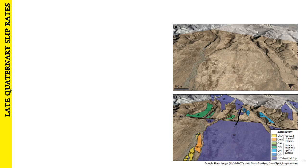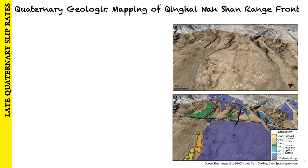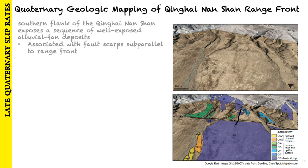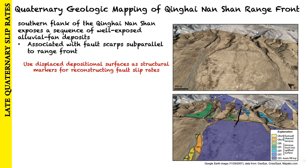Now let's talk about the section describing how they reconstructed late Quaternary slip rates on the Qinghai-Nanshan fault. To do that, they first mapped the Quaternary cover of the Qinghai-Nanshan. A sequence of well-exposed alluvial fan deposits is preserved along the southern flank, associated with well-defined fault scarps that strike subparallel to the range front, which they used as structural markers for reconstructing fault slip rates.